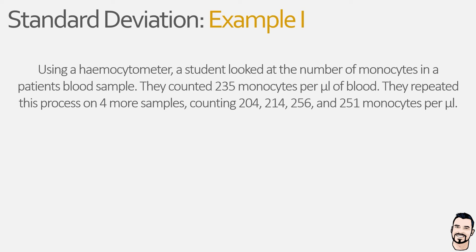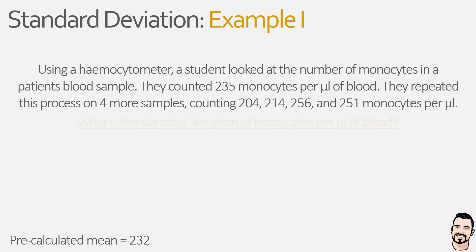To try and increase the accuracy of their data, they perform repeat counts on different blood samples from the same patient, noting 204, 214, 256, and 251 monocytes per microlitre. Following this experimental counting, the student calculated the mean to be 232 cells and now wants to know how dispersed their data is, i.e. what is the standard deviation of monocytes per microlitre.